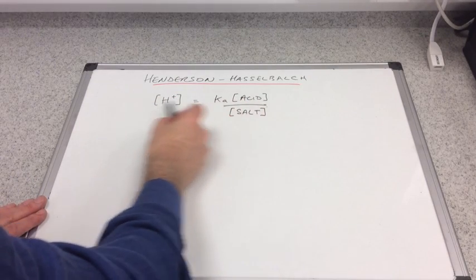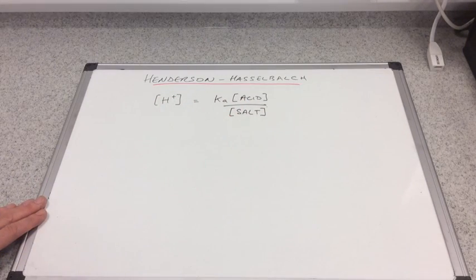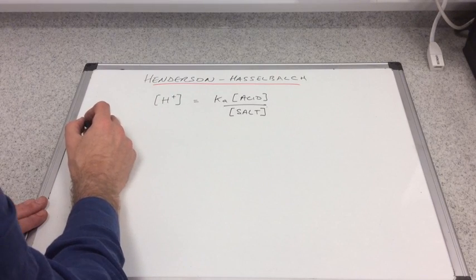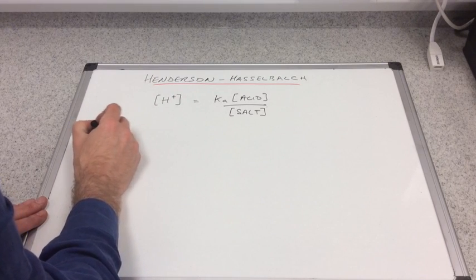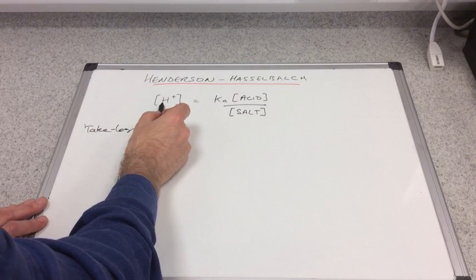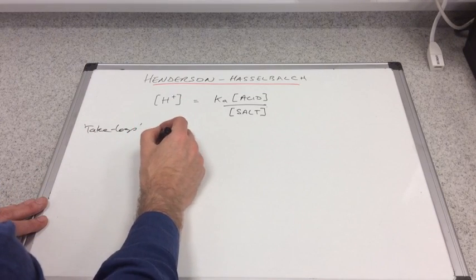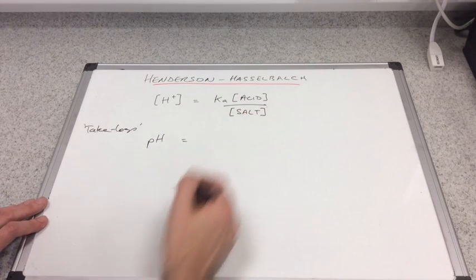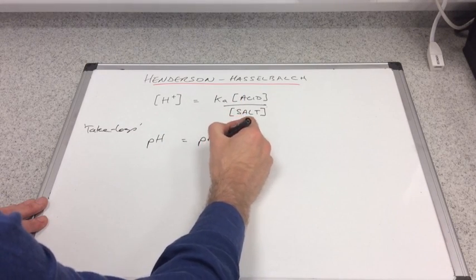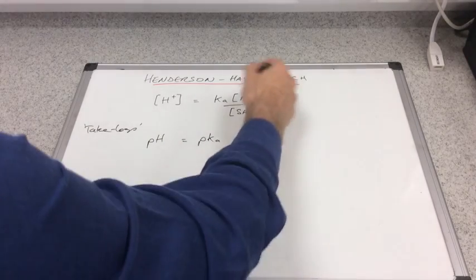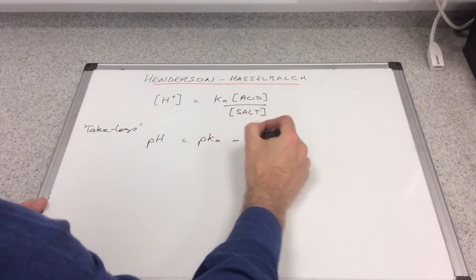What we're going to do is take logs on both sides. I'm going to actually take minus logs, so we know that minus log of H+ concentration is pH, the minus log of the Ka is the pKa, and these are terms that we are familiar with.